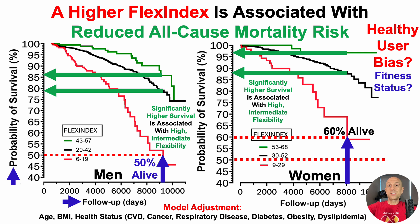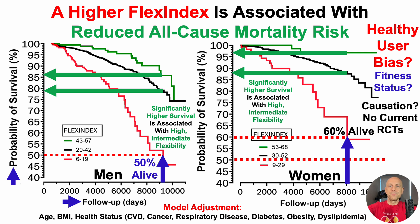It may be that VO2 max and strength are better predictors and flexibility really has nothing to do with it — we don't yet know that. But these data are suggestive that it could be involved. Additionally, we don't know about causation. If we improve somebody's whole body flexibility and range of motion for all 20 movements, do we see improvements in health-related measures and potentially longevity? As far as I know, there are no randomized control trials for that, so we'll have to wait for those studies to be published.